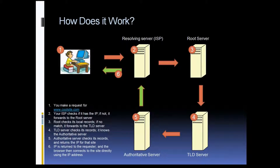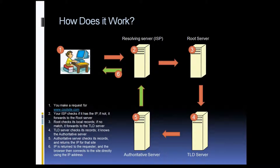At that point, the request gets sent up to the TLD servers, which will check their local cache and say, 'I don't know what the IP is for that specific site, but I do know where the authoritative server is for that domain.' So the request will get sent over to the authoritative server, which will check its local zone file and say, 'I've got that domain right here, and here is the IP address for it.' At that point, the IP will get sent back to your computer, and your web browser will connect directly to the web server.